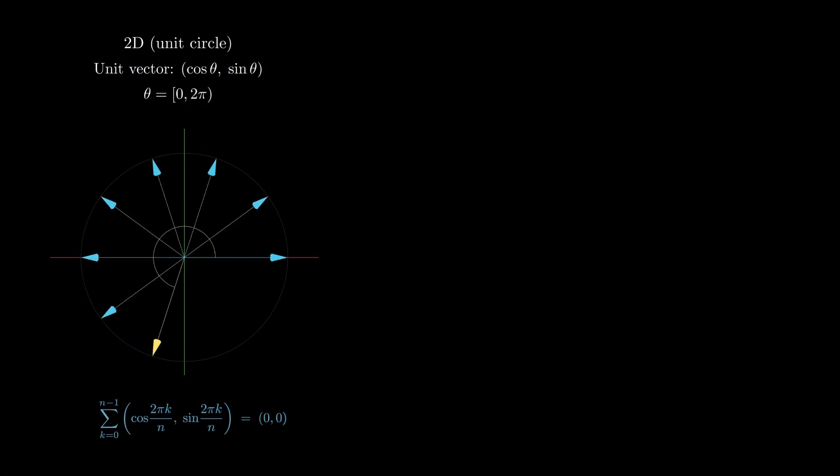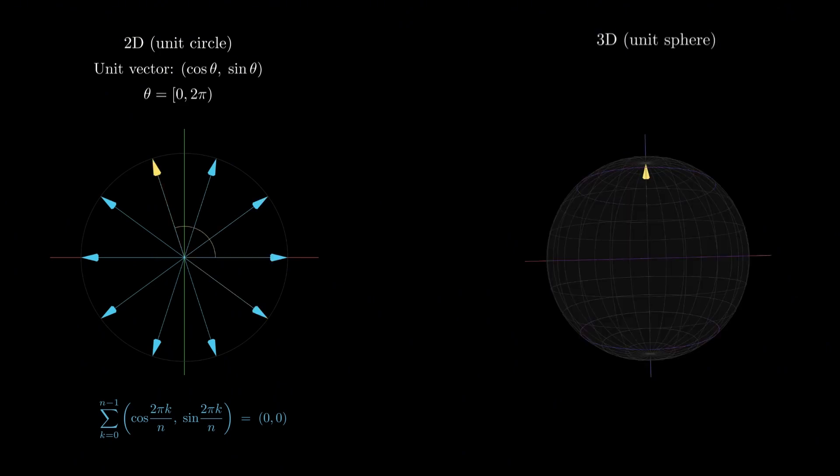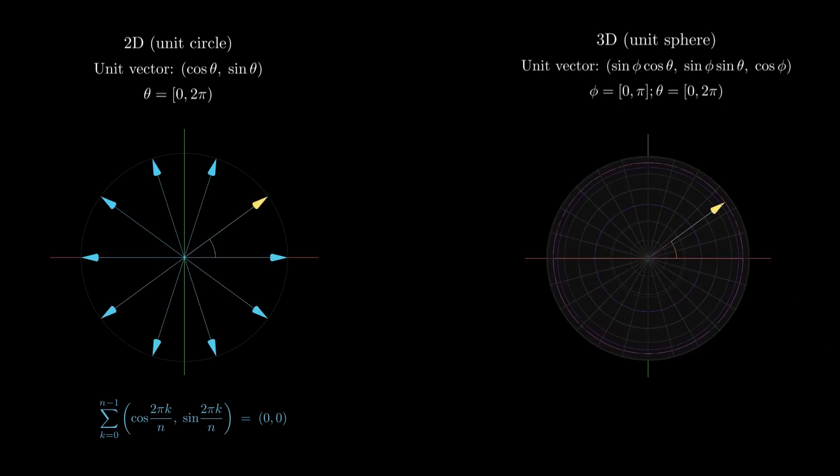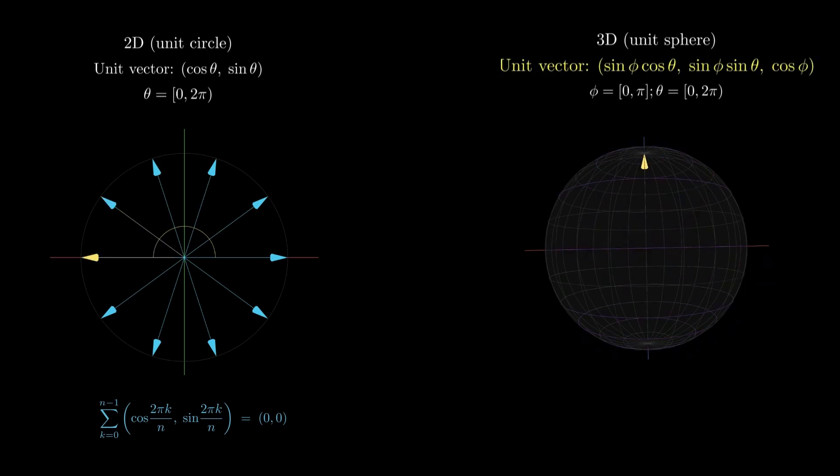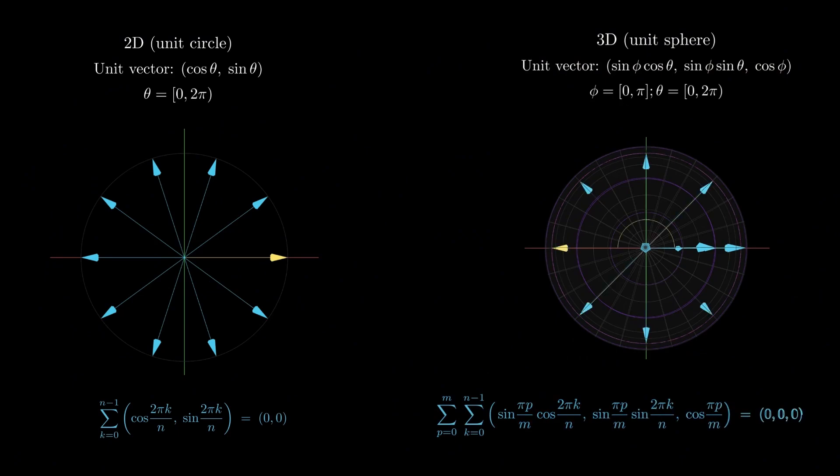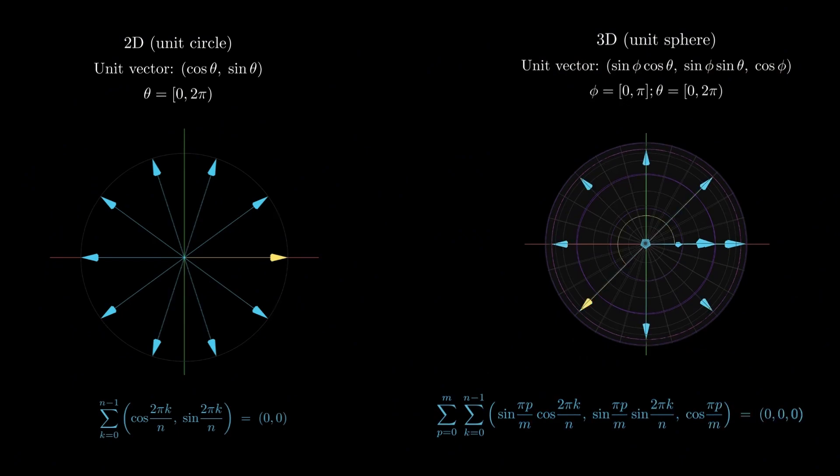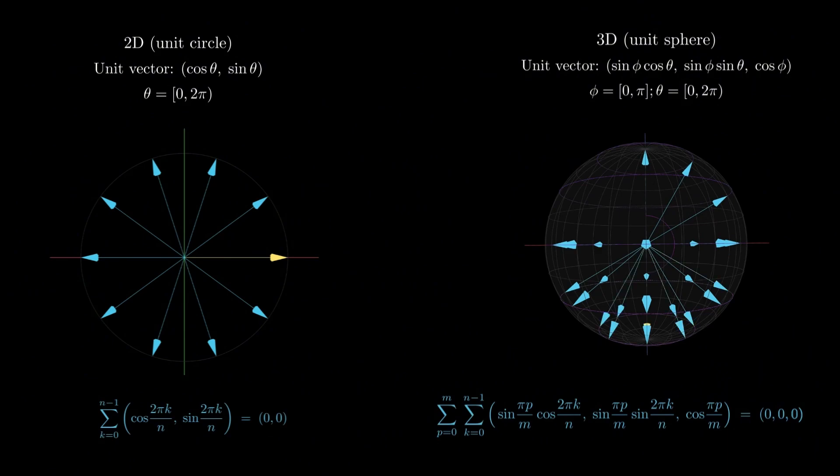Can we do something similar in three dimensions? Yes. In spherical coordinates, each point on the sphere is determined by two angles: φ ranging from 0 to π (the polar angle, like latitude), and θ varying from 0 to 2π (the azimuthal angle, like longitude). And the three coordinates of a unit vector pointing in that direction are given. So we can construct a fully symmetric configuration using a nested double sum over these angles. This indeed gives a total sum of zero, and it follows naturally from the symmetry of sine and cosine sums we already used in two dimensions.